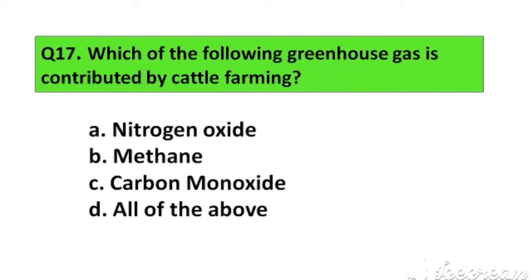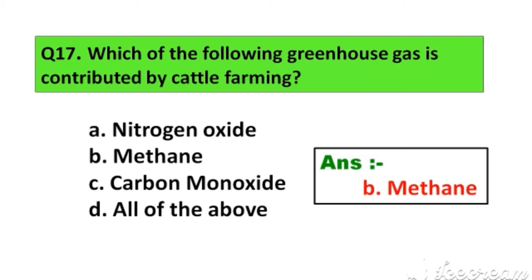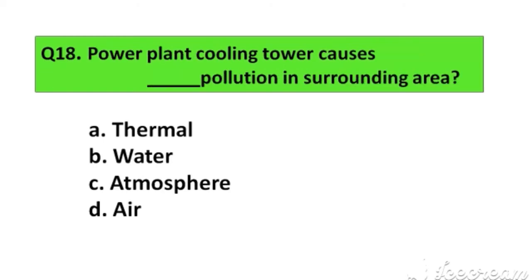Question number 17. Which of the following greenhouse gases is contributed by cattle farming? Option A. Nitrogen oxide, B. Methane, C. Carbon monoxide, D. All of the above. The right answer is Option B. Methane.